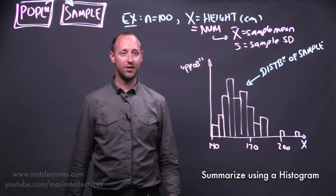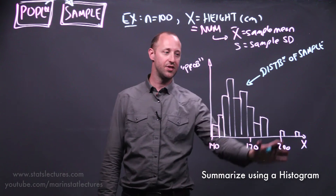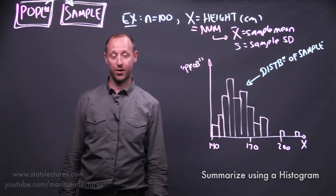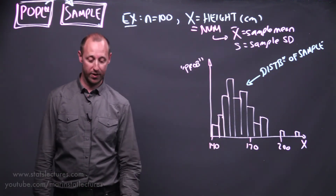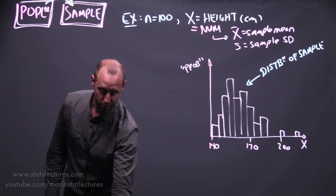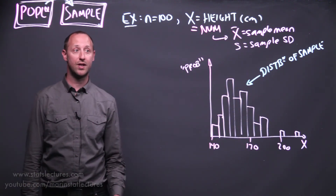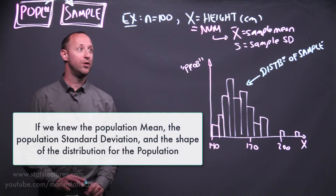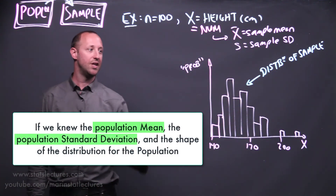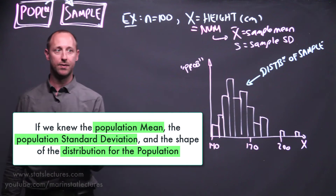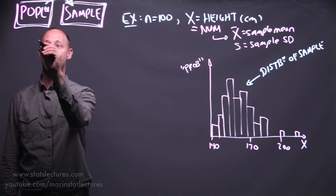For our 100 individuals, what was the mean, what was the standard deviation, and what's the distribution of their heights? Now we'd like to move into a world where we could suppose what if we knew the truth for the entire population — the true mean, the true standard deviation, and the true shape of the distribution.